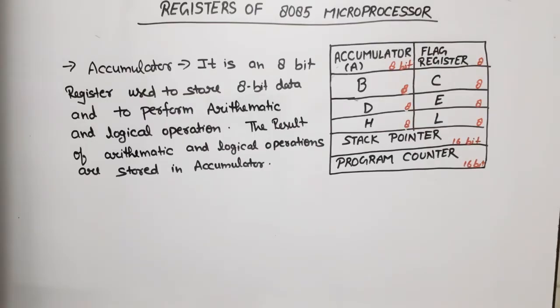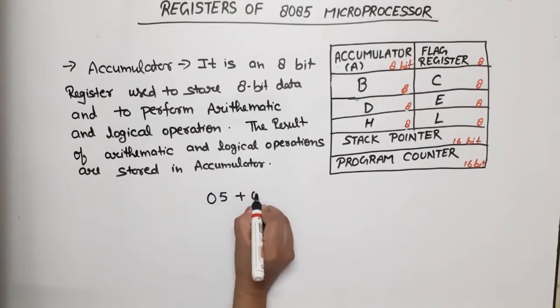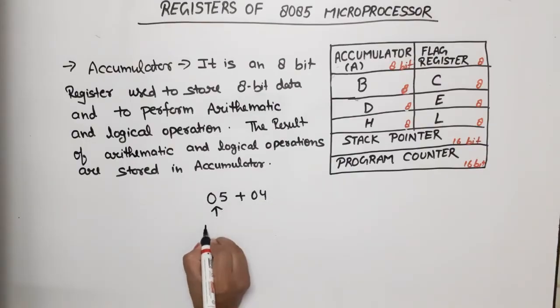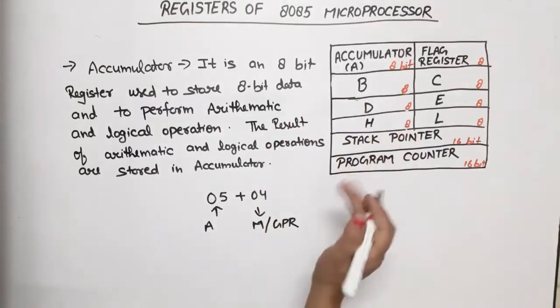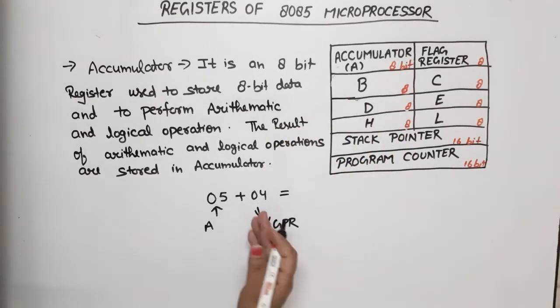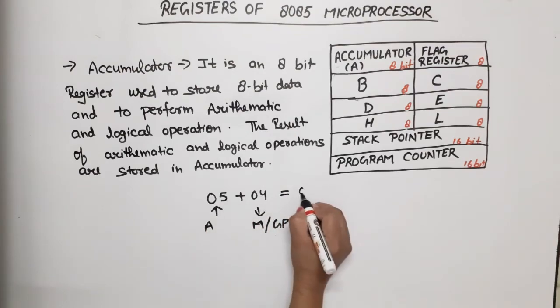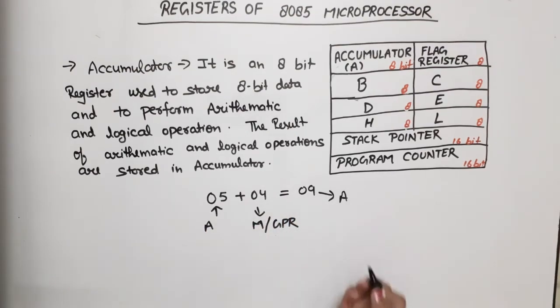If you perform any arithmetic or logical operation, one data should be in the accumulator and one data can be in any general purpose register or memory pointer. Suppose I have to perform 05 plus 04: this data is in accumulator, this data can be in memory or any GPR. After addition, the result 05 plus 04 equals 9 will be stored in the accumulator.